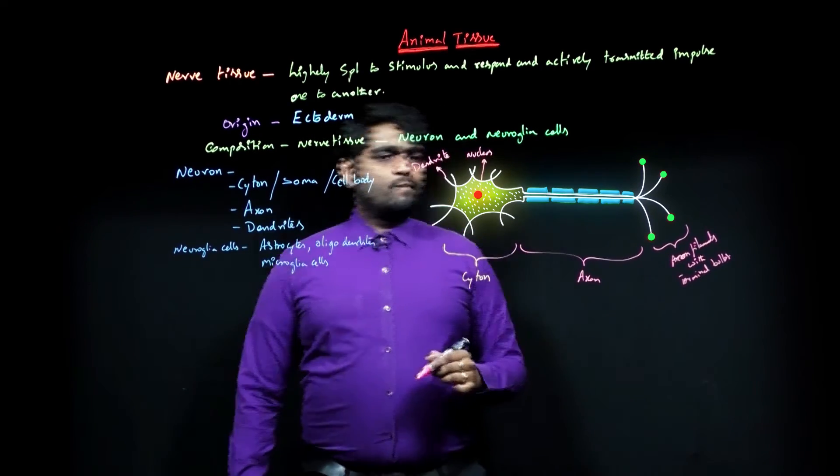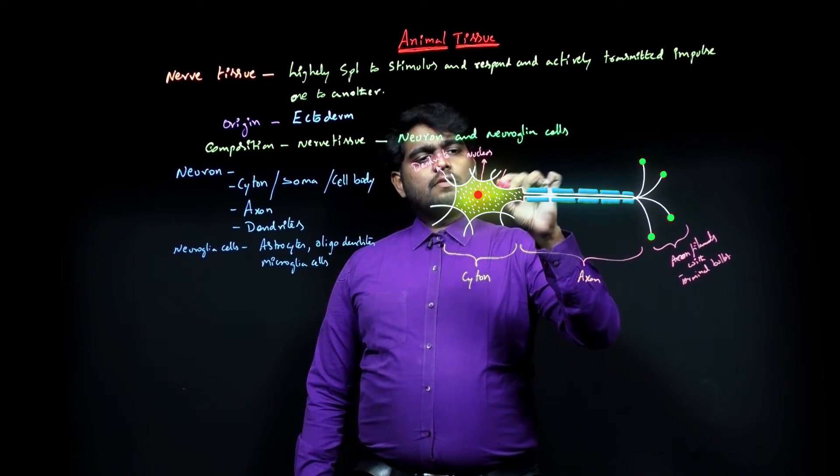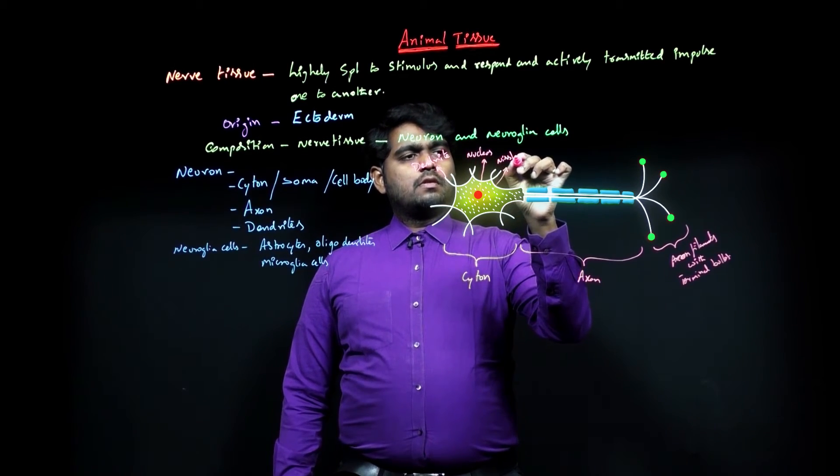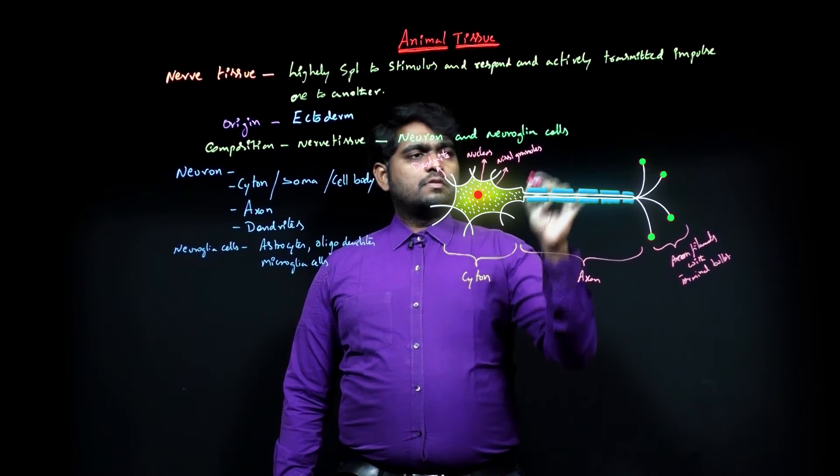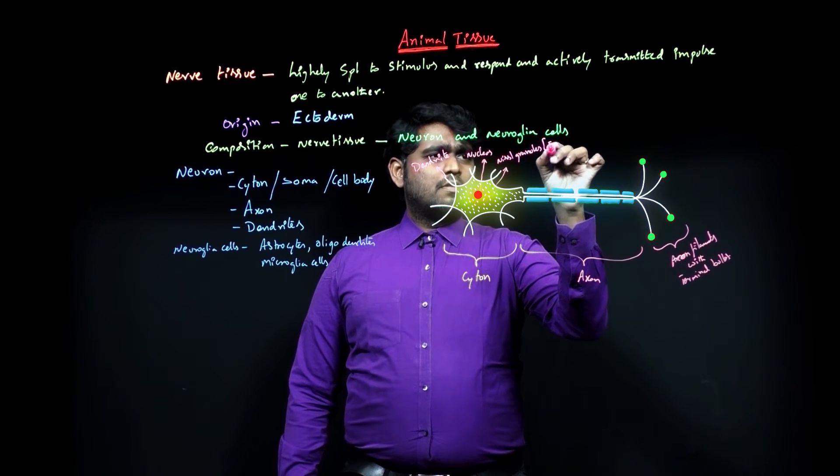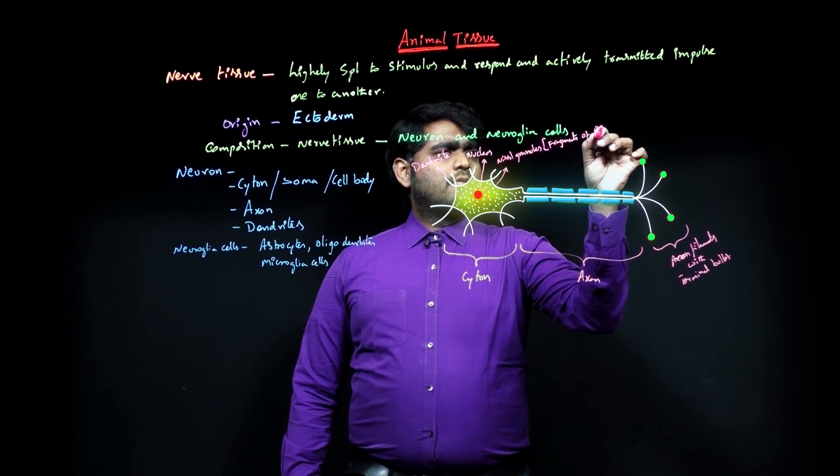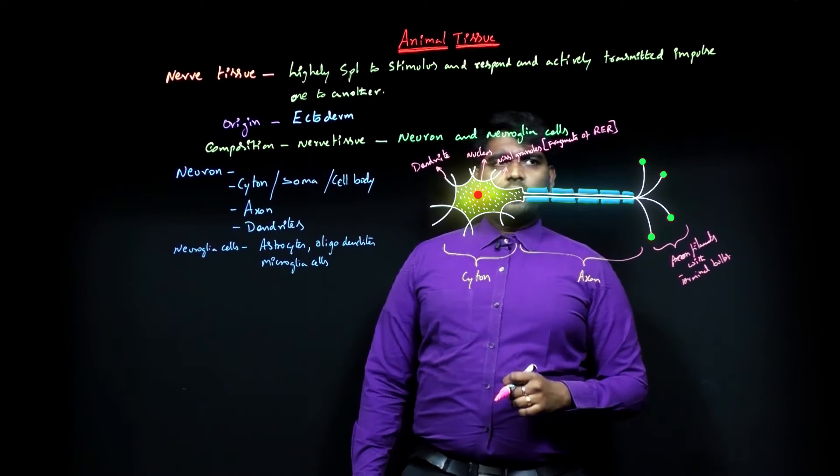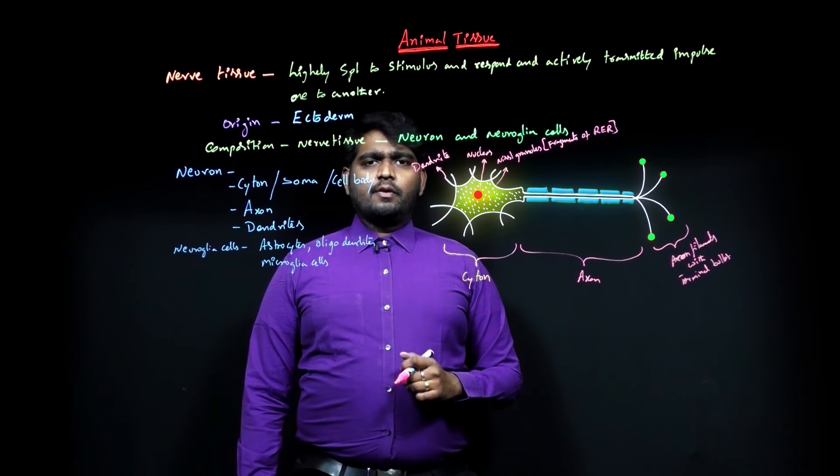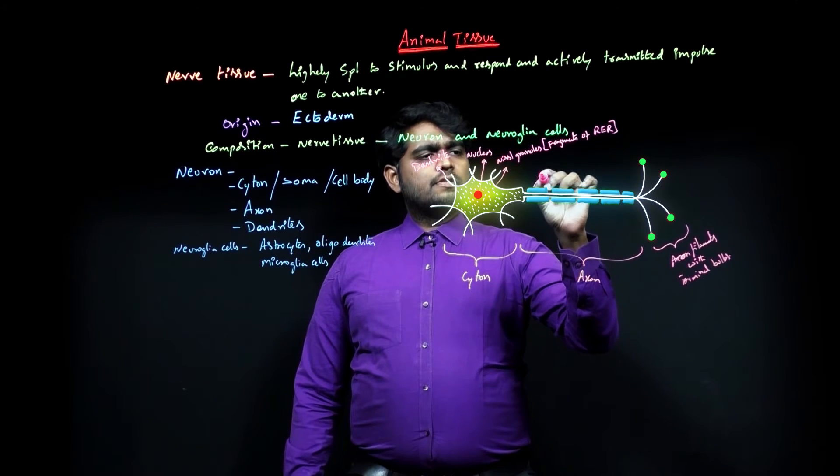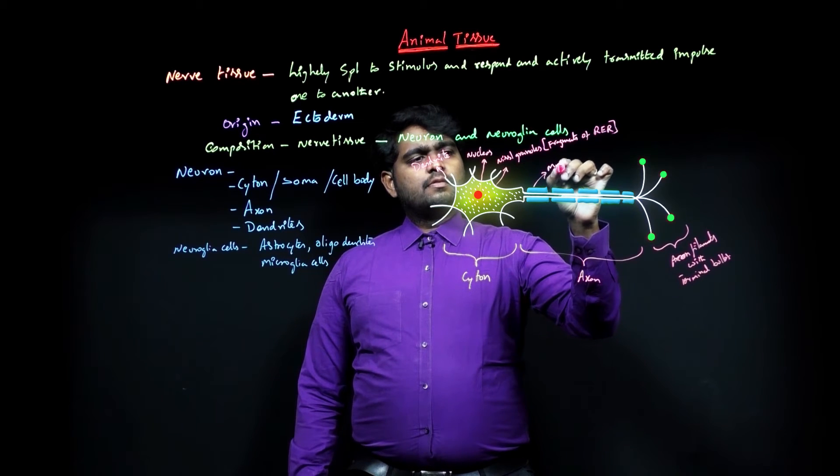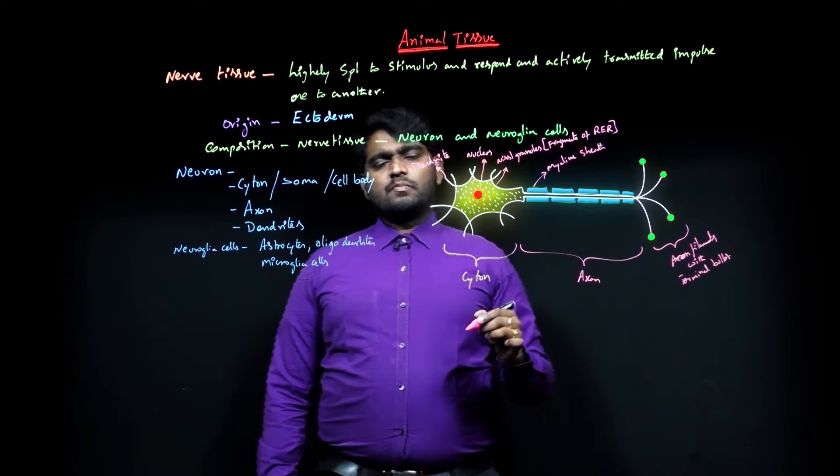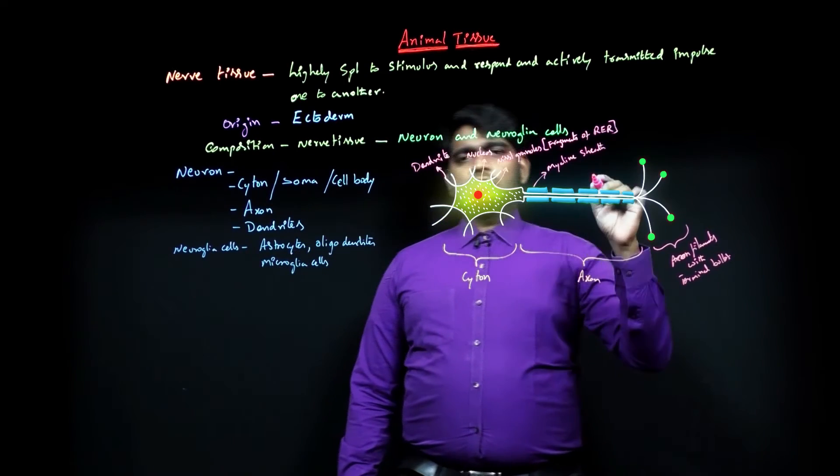Nucleus. These are Nissl granules—Nissl granules also called fragments of rough endoplasmic reticulum, RER. This one is myelinated sheath, that means myelin sheath, which is composed of cells called Schwann cells.